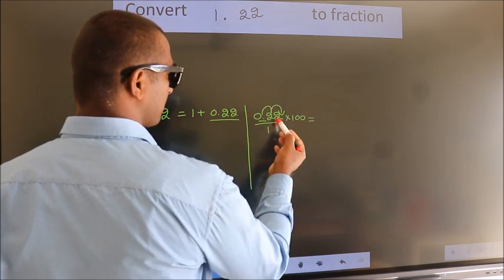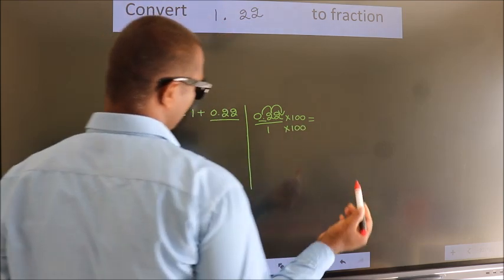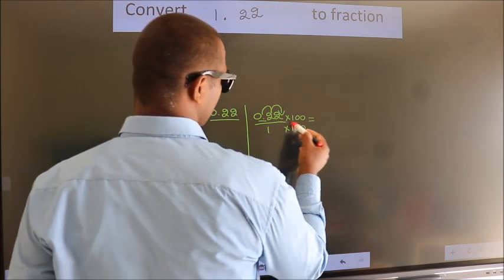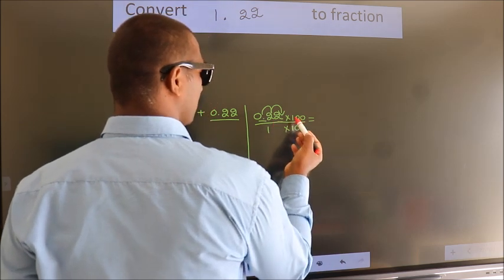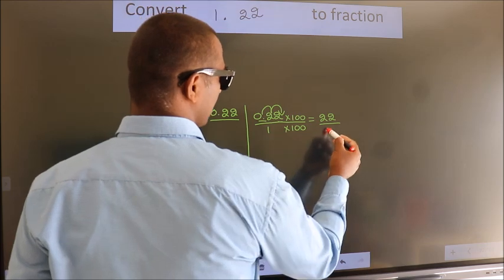Whatever we are multiplying in the numerator, in the denominator also we should do the same. 0.22 into 100 is 22. 1 into 100 is 100.